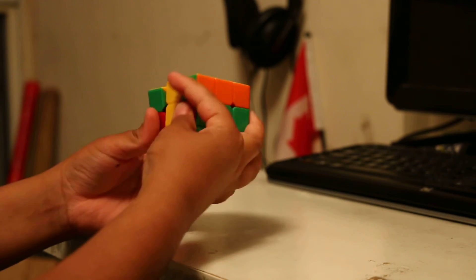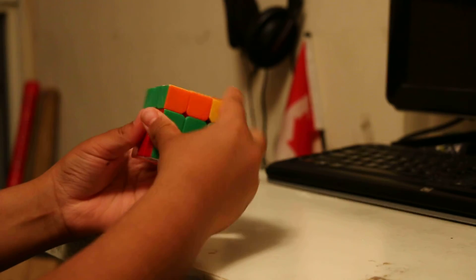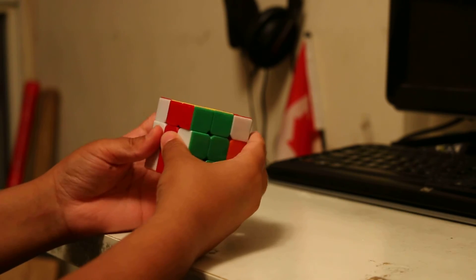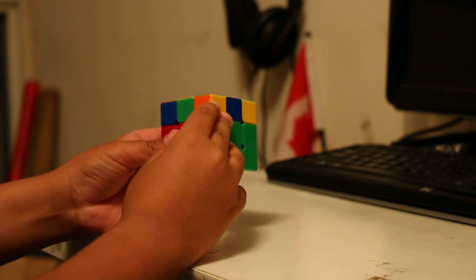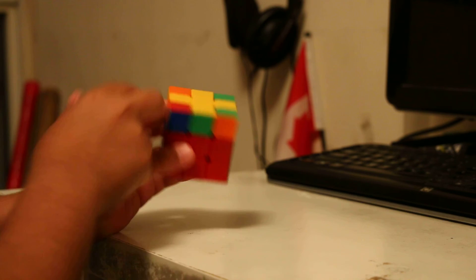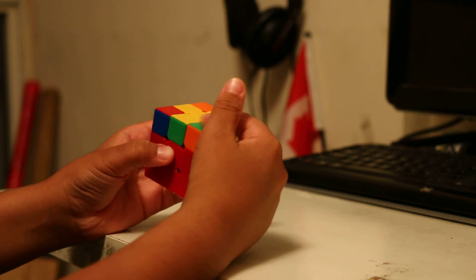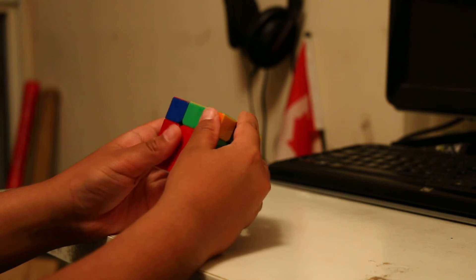For the next one, let me just set it up. Again, we have it on the left and on the right. This time the bar is vertical, so you're going to do this algorithm. That gave me a PLL skip.